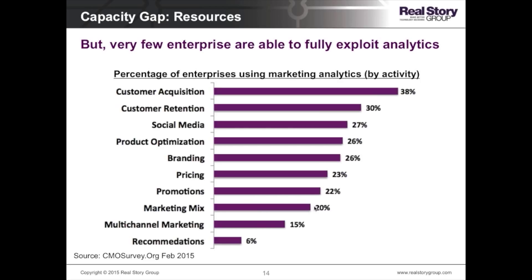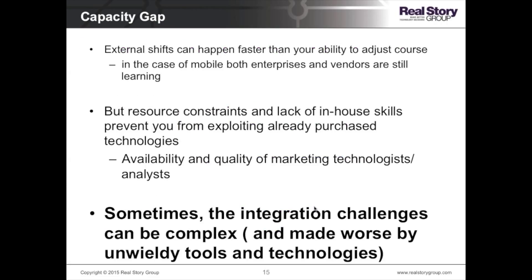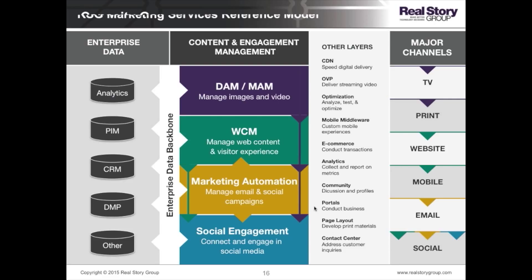Analytics is very hot. Some big data tools are relatively new, but traditional marketing analytics technology is fairly mature, and spend reflects that. While mobile spend was only 3.2%, spend on marketing analytics is about twice that at 6.4%. But when you look at what customers are actually achieving with this level of spend, the message is that very few enterprises are able to fully exploit analytics.